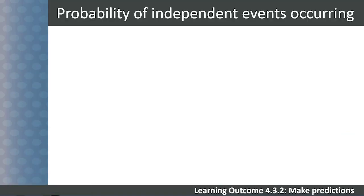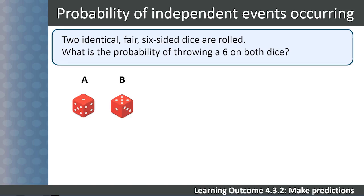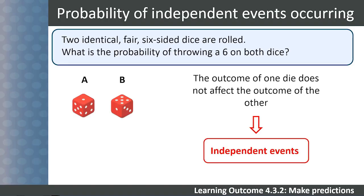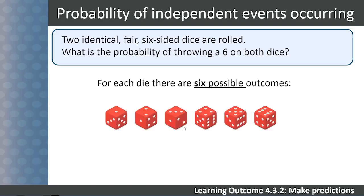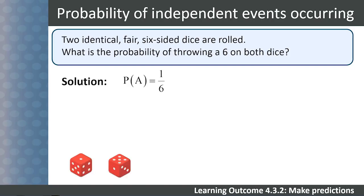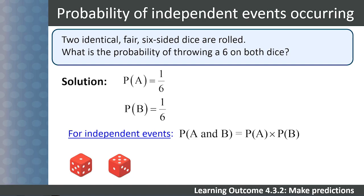Let's take a look at the solution. Two identical, fair, six-sided dice are rolled — what is the probability of throwing a six on both dice? We can call our dice A and B. The outcome of one die does not affect the outcome of the other, so we are dealing with independent events. For each die, there are six possible outcomes, and one of these is getting a six. The probability of throwing a six on die A equals one over six, and on die B equals one over six. For independent events, probability of A and B equals probability of A multiplied by probability of B, which equals one over six times one over six, giving us a probability of one over 36.